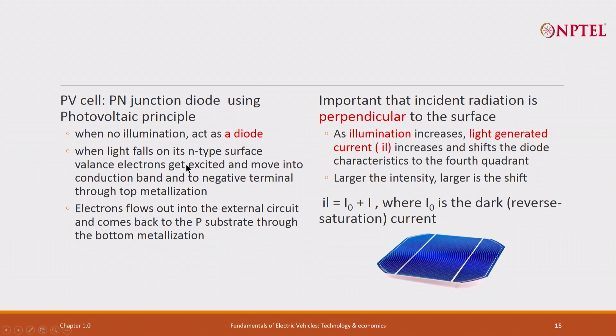Light falls on the n-type surface, valence electrons get excited and move into the conduction band. Electrons flow out into the external circuit and come back to the P substrate through the bottom metallization. Important that incident radiation is perpendicular to the surface.